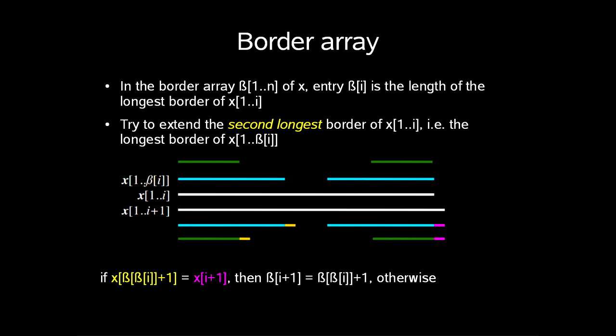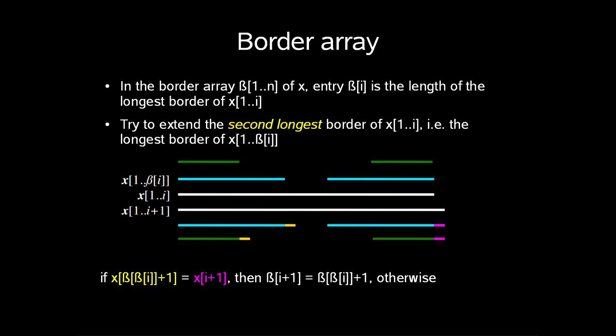Now, if x entry i of beta of beta plus 1 is equal to x i plus 1, then beta i plus 1 is equal to entry i of beta of beta plus 1. Otherwise, we try to extend the third longest border of x1 up to i. You get the idea.